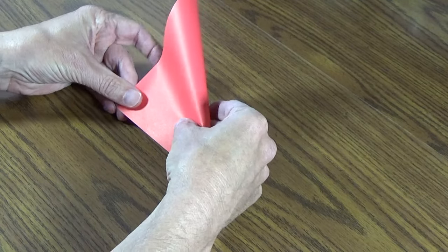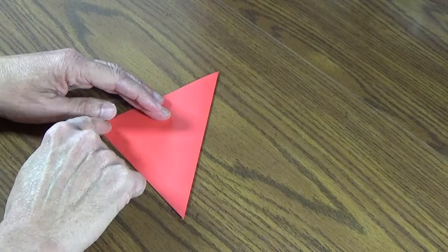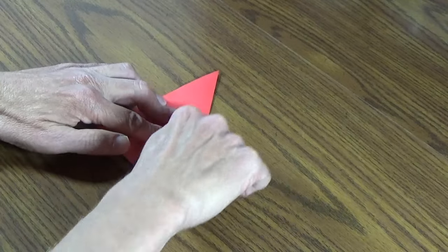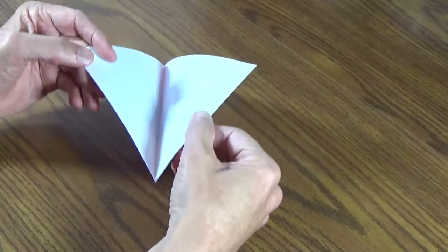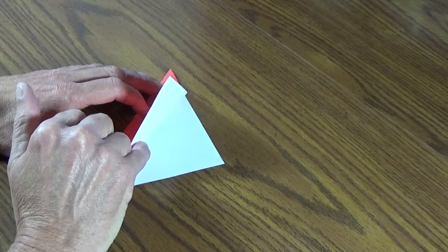Try to get it right on the corner as closely as you can, and it helps me to push out to the middle and then out to the corners. And there you have your triangle and your valley, with your paper facing with the opening out to the right.